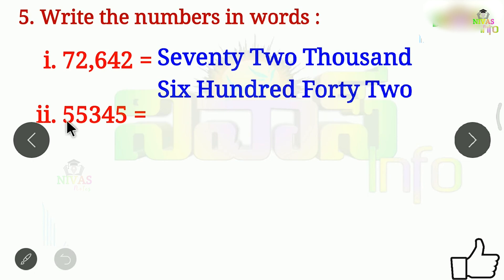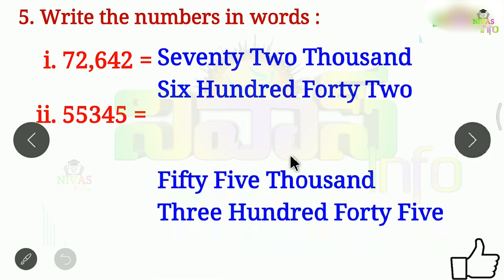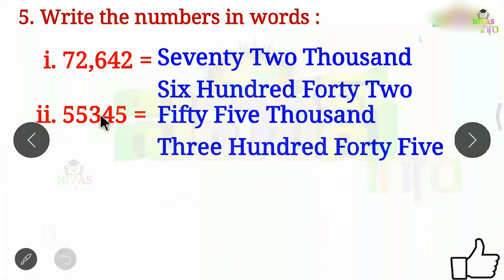In this 10,000 place there is 5, and in the 1,000 place there is 55. That means we use 55 in the thousands place. Next: 3 in this place is 300.